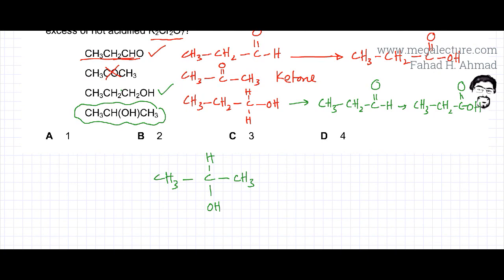Secondary alcohols get oxidized into ketones. Secondary alcohols always get oxidized. The OH changes into a ketone group. This is the product that you're going to get. It's not going to be a carboxylic acid. This option is also incorrect.